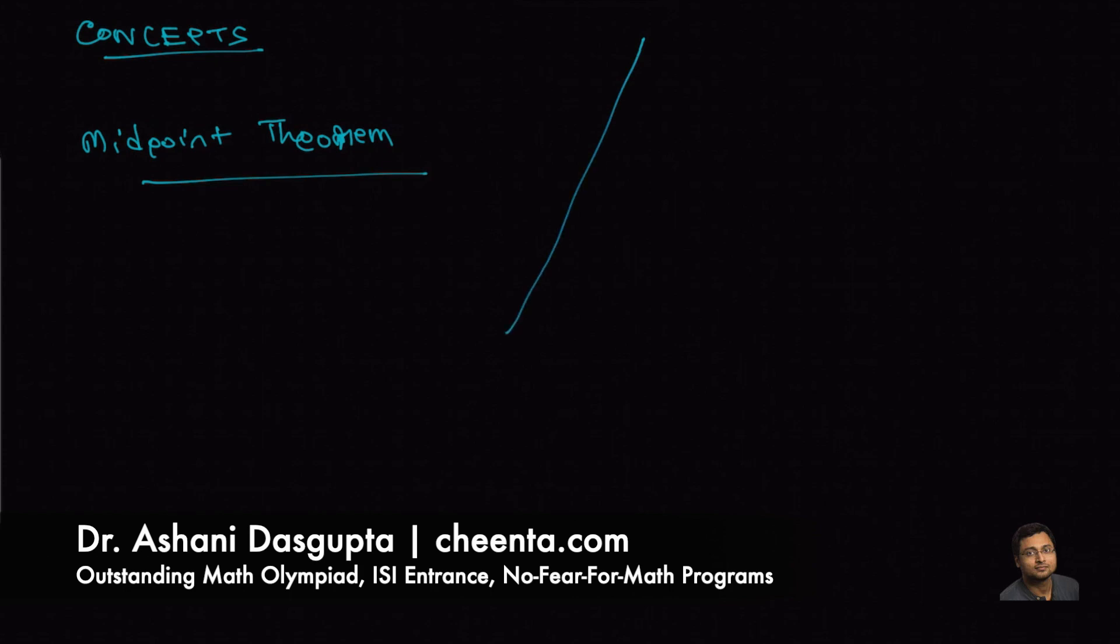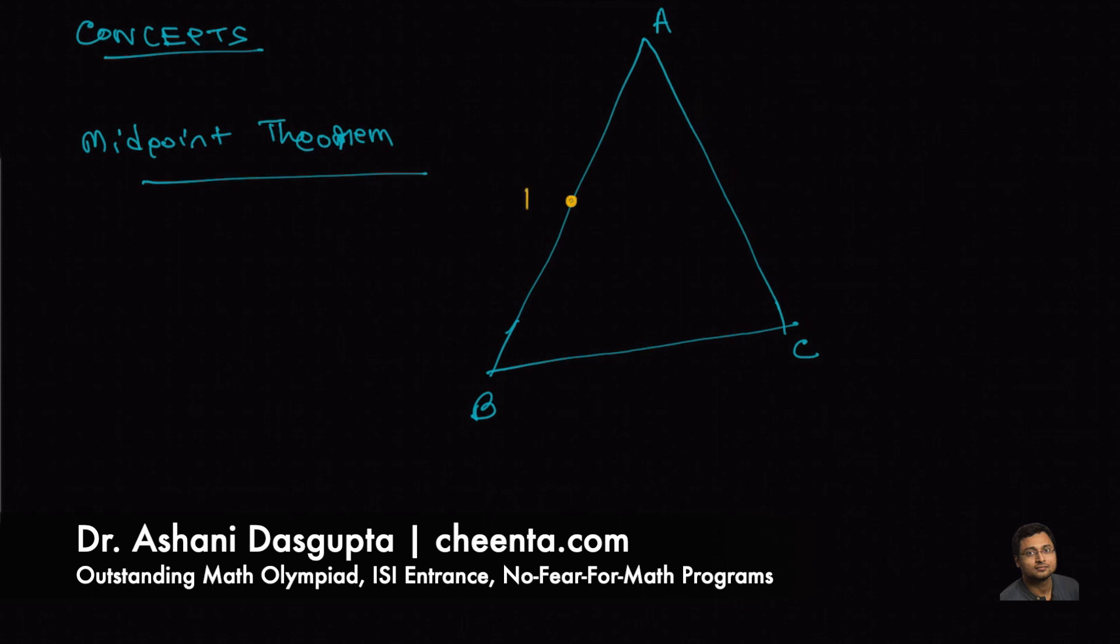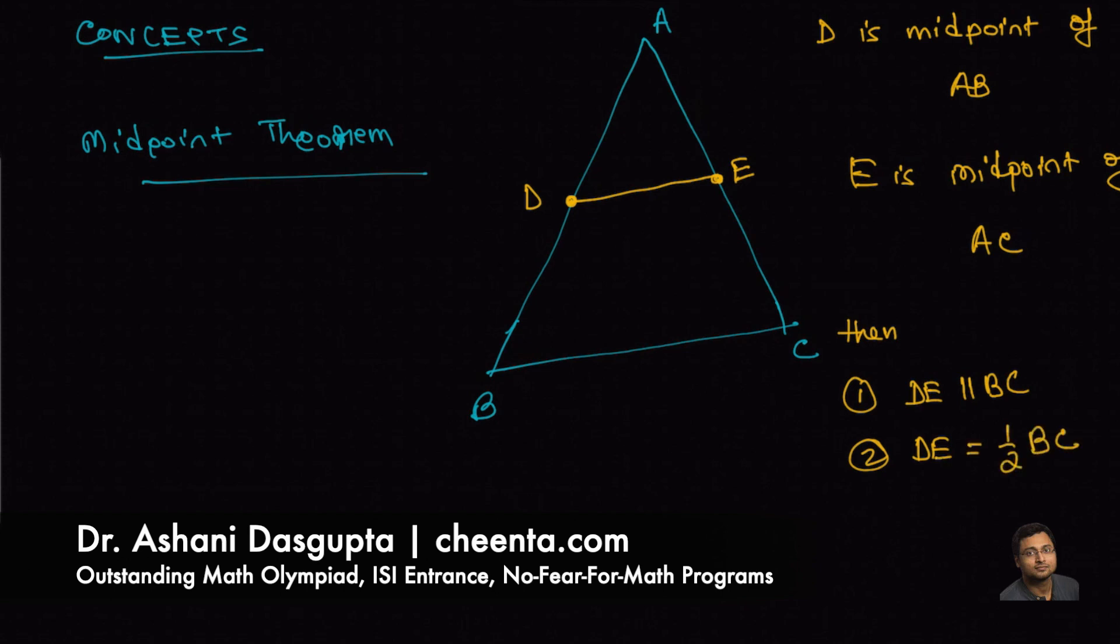The midpoint theorem says that if you have a triangle ABC and D and E are the midpoints of AB and AC, we have two conclusions: DE is parallel to BC and DE is half of BC. This is the statement of the midpoint theorem.